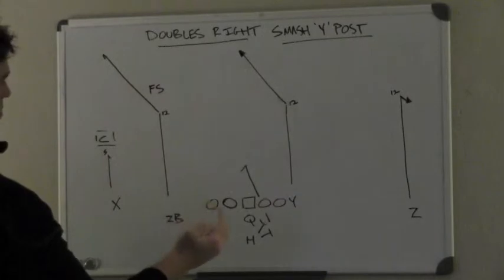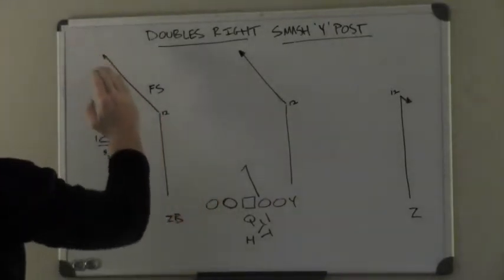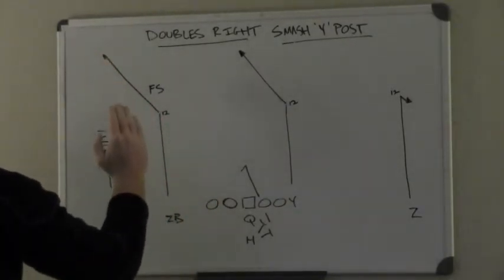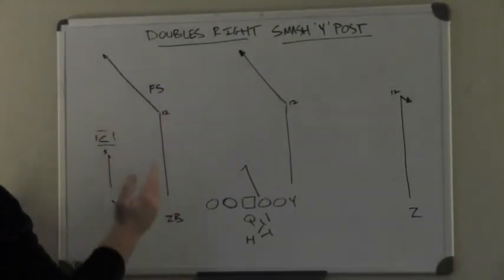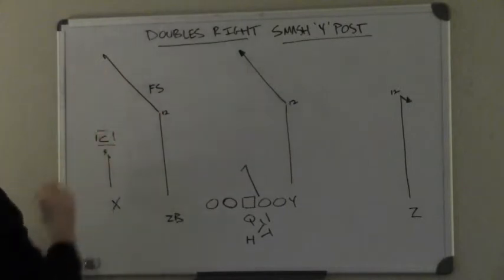It's not going to be too loopy of a throw. It should be as firm as he can to the sideline, maybe a little bit of an arc away from the free safety horizontally. He's going to be stretching vertically and horizontally.